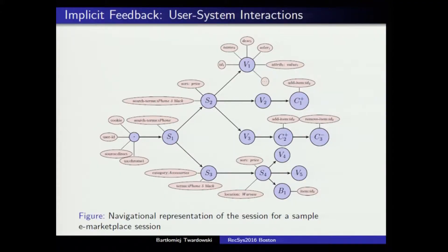For me the session is actually the best source of implicit user feedback. Here we have the user navigational graph, where the user first goes to a page and searches for an item — that's event S1 — then sorts by price, sees the first item, goes to another one, adds to cart, exchanges with another, and the session goes on. There is a lot of information here.